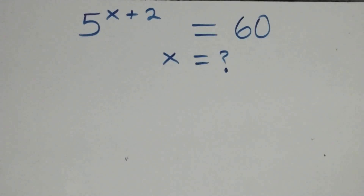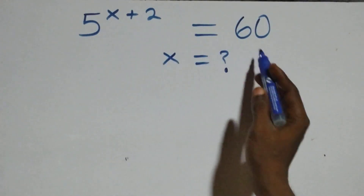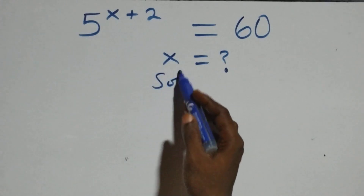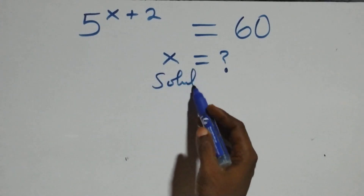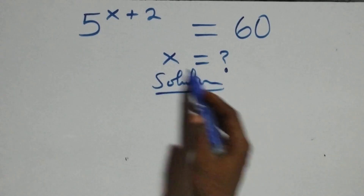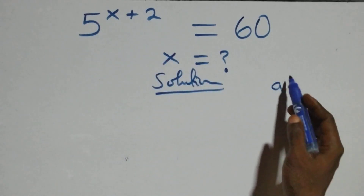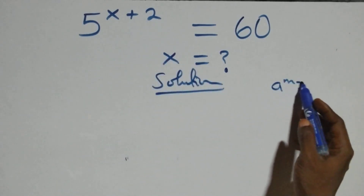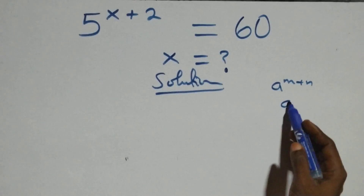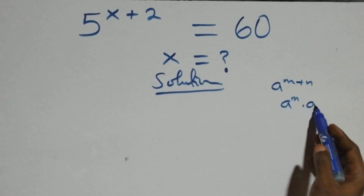Hello, you are welcome. How to solve this nice exponential equation. What we have here: this follows when we have a raised to power m plus n. This can be expressed as a raised to power m times a raised to power n.